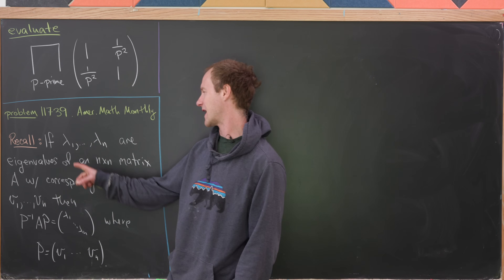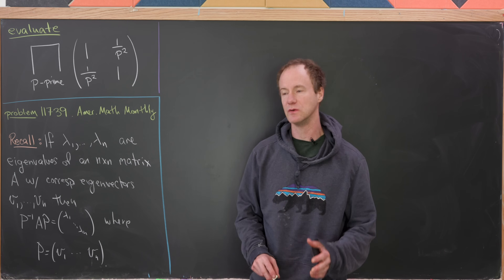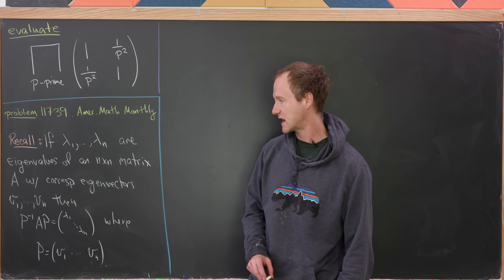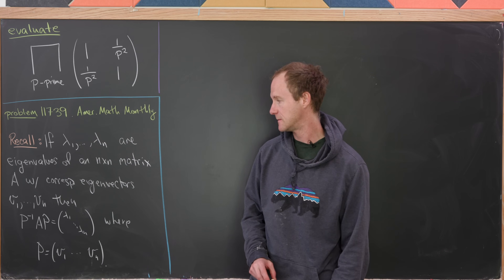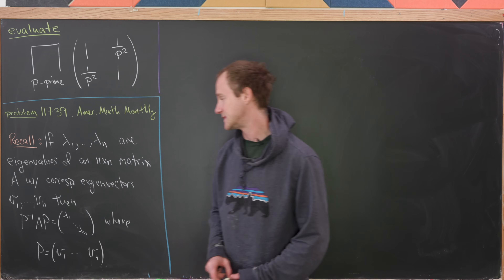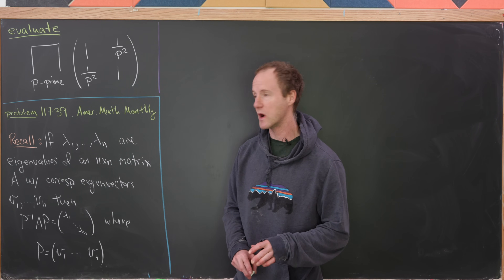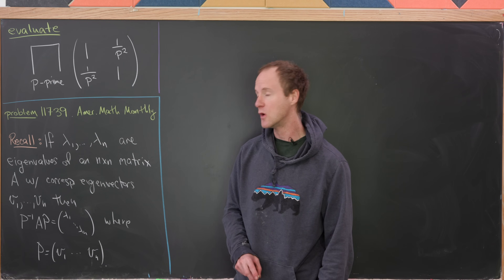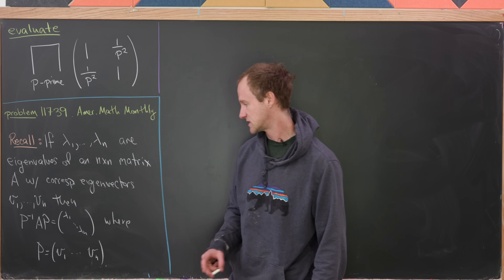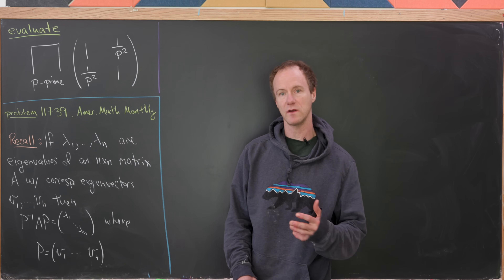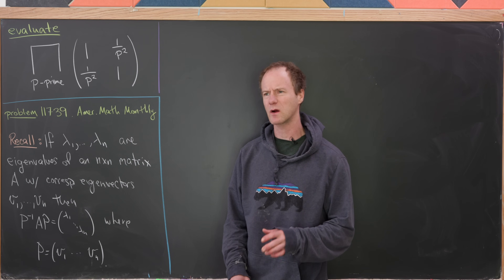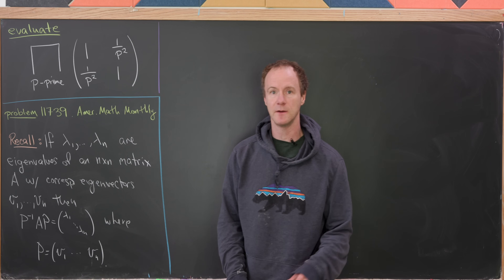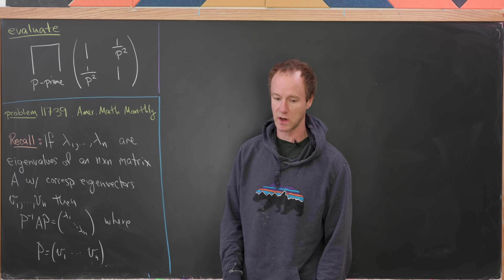Let's recall that if we've got eigenvalues lambda 1, lambda 2, up to lambda n of an n-by-n matrix A, and their corresponding eigenvectors are V1, V2, up to Vn, then P-inverse times A times P is the diagonal matrix where the diagonal entries are those eigenvalues. The diagonalization matrix P is given by placing V1, V2, up to Vn as columns, where the first column is eigenvector V1, the second column is eigenvector V2, and so on.